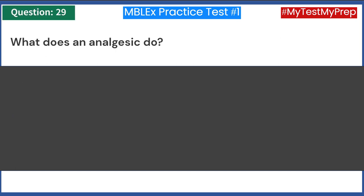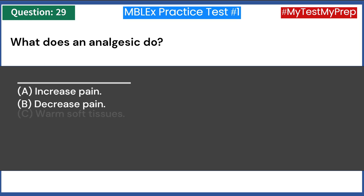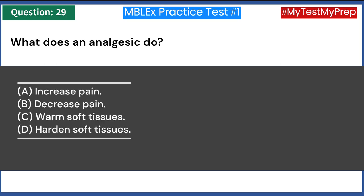What does an analgesic do? A) Increase pain. B) Decrease pain. C) Warm soft tissues. D) Harden soft tissues. Answer: B — decrease pain.